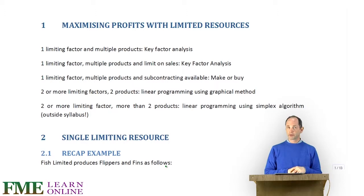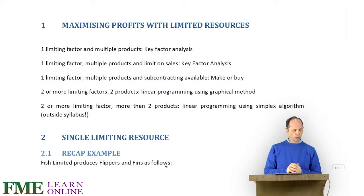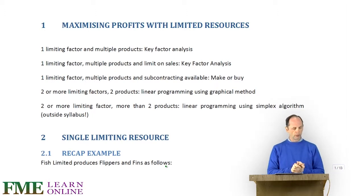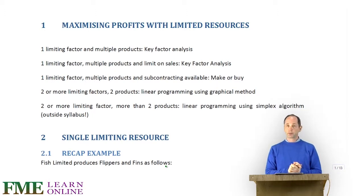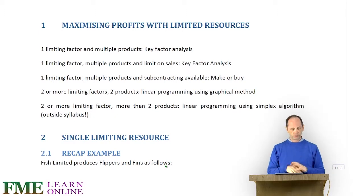It's only the variable costs and the sales revenue increasing, so it's just the contribution we look at. By maximising the contribution, we will maximise the profits as well. If there's one limiting factor but multiple products and we could subcontract, then we have the make-or-buy scenario or decision to make.